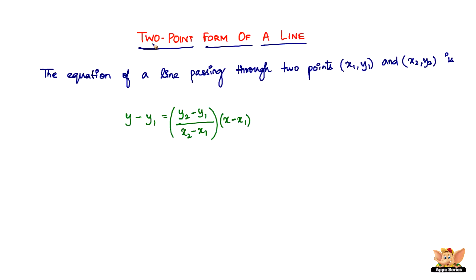All right, here we are. What is the two-point form of a line? The equation of a line passing through two points x1 comma y1 and x2 comma y2 is given by